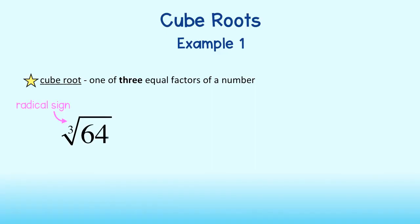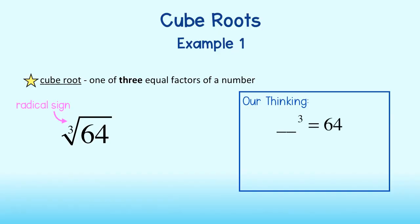This number is read the cube root of 64. We must ask ourselves, what number cubed will equal 64? In this case, since 4 times 4 times 4 is equal to 64, the number we are looking for is 4. The cube root of 64 is 4.